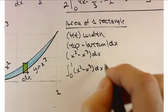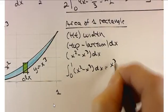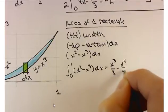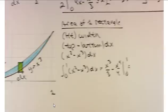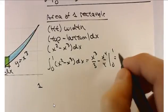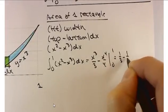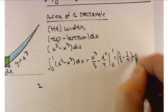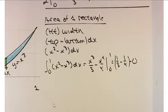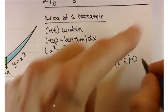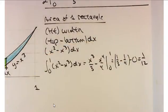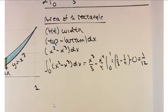The antiderivative is x cubed over 3 minus x to the 4th over 4, evaluated between 0 and 1. That gives 1/3 minus 1/4, minus 0. One third minus one fourth is 1/12. That was easy. Kind of a friendly one to follow up our first example.